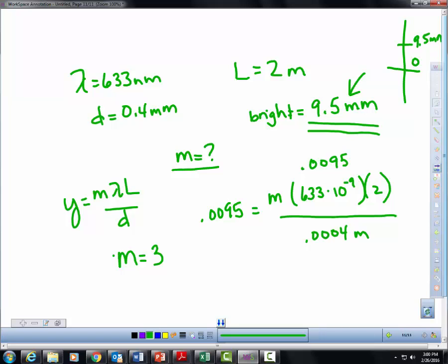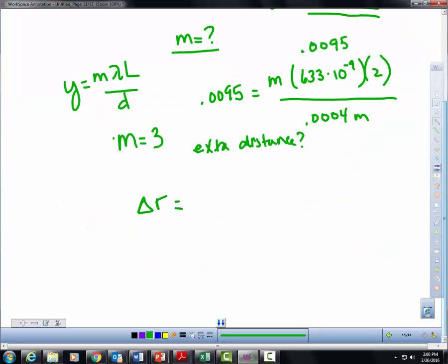Now we know that these things will be a whole wavelength apart from one another. And the question is asking, what is the extra distance that one wavelength travels? Well, since they're a whole wavelength apart from one another, we're looking for our path length difference. Or how much further one wave has to travel than the other one. So they are a multiple of a wavelength apart from each other, and that multiple is your order. So change in R equals 633 times 10 to the negative 9th times 3. So that means that these waves, one wave rather, has to travel 1.9 times 10 to the negative 6th meters further than the other one.